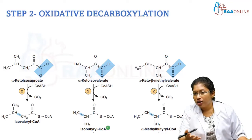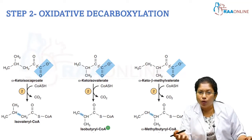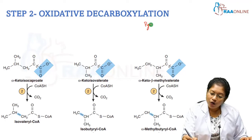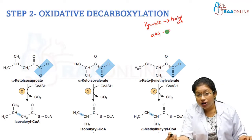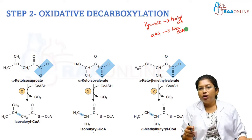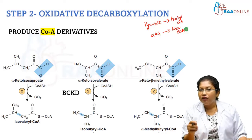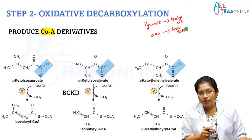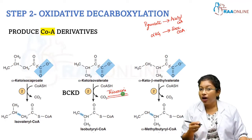The second step in the metabolism is oxidative decarboxylation. Whenever there is oxidative decarboxylation of the alpha keto acid, it will produce a CoA derivative compound. For example, if pyruvate undergoes oxidative decarboxylation, it gives acetyl CoA. Alpha ketoglutarate undergoes oxidative decarboxylation to produce succinyl CoA. So all the keto acids are going to give CoA derivatives. The enzyme here is BCKD, branched chain alpha keto acid dehydrogenase. All oxidative decarboxylation requires thiamine as the coenzyme in the form of TPP, thiamine pyrophosphate.